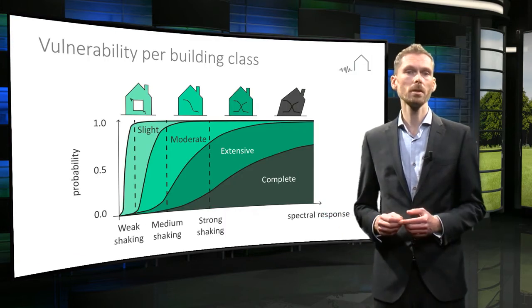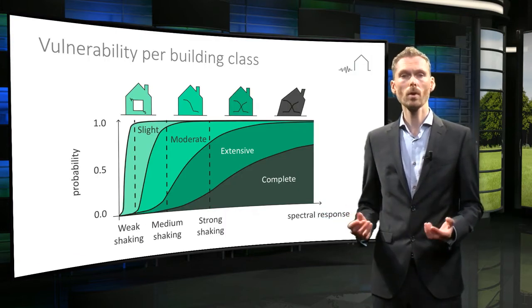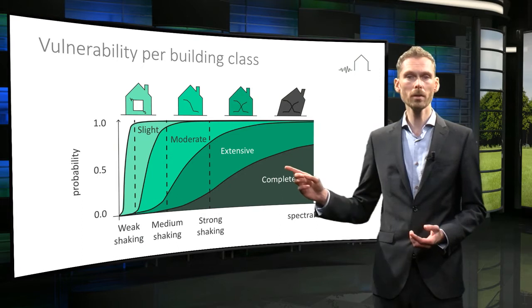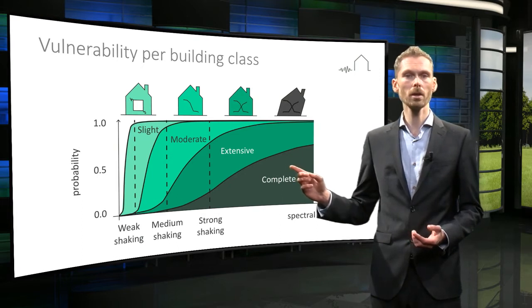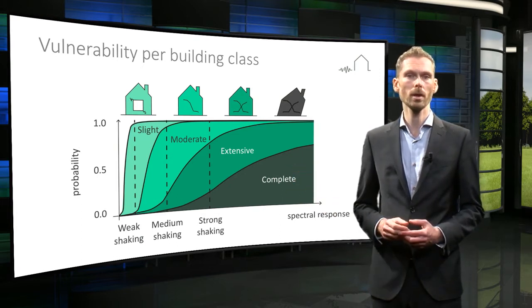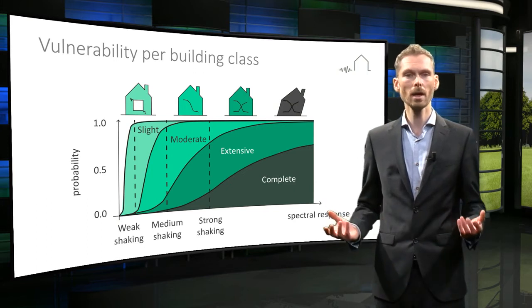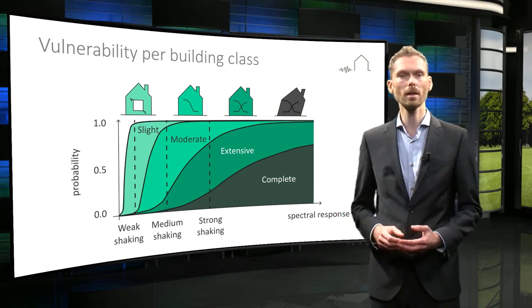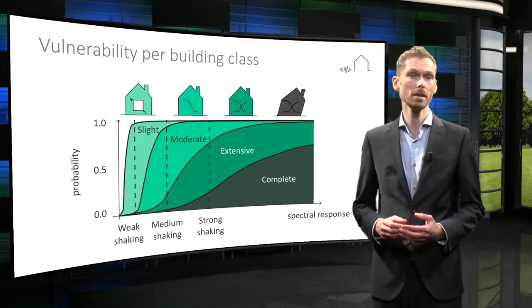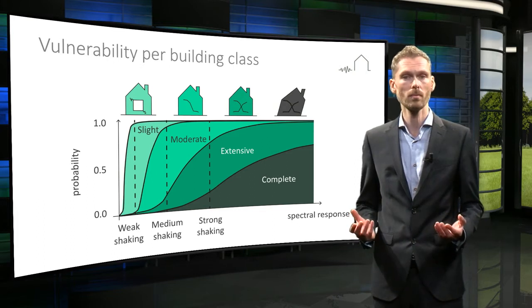You can then represent this vulnerability with a graph, relating the probability that a building will get damaged to the intensity of shaking during an earthquake. Using this graph you can calculate the expected level of damage for the group in relation to a specific seismic event.